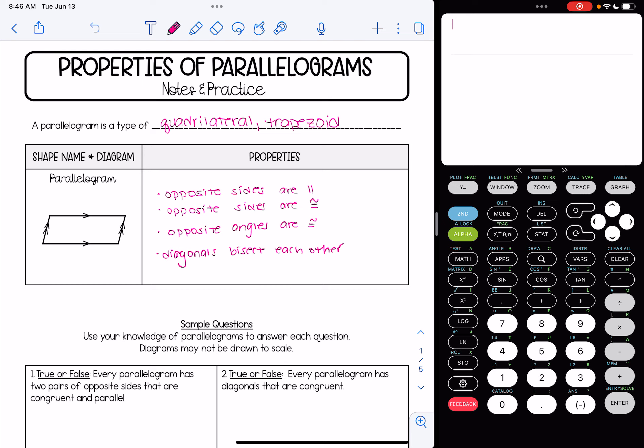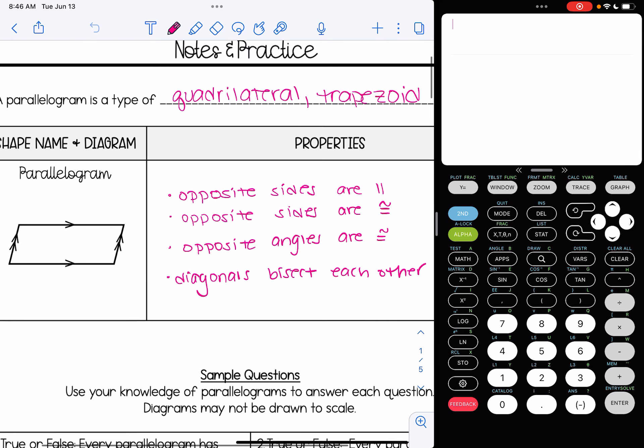In addition, parallelograms have some new properties. So both pairs of opposite sides are parallel. You can see that marked in the diagram here. Opposite sides are congruent. The opposite angles are congruent to each other. So here's what that looks like in the diagram.